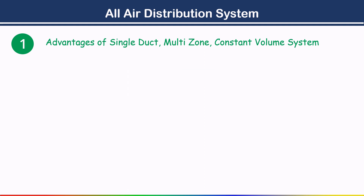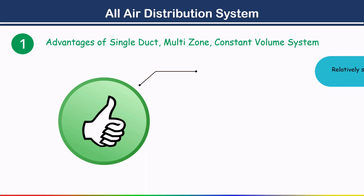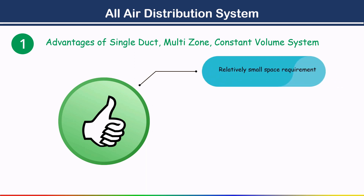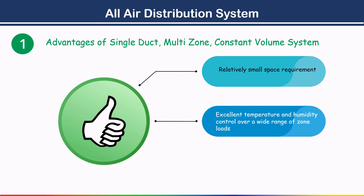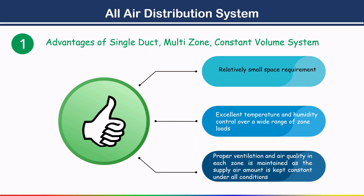Advantages of the single duct multi-zone constant volume system include: relatively small space requirement; excellent temperature and humidity control over a wide range of zone loads; and proper ventilation and air quality maintained in each zone, as the supply air amount is kept constant under all conditions.